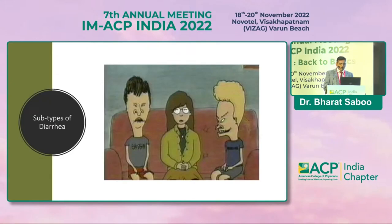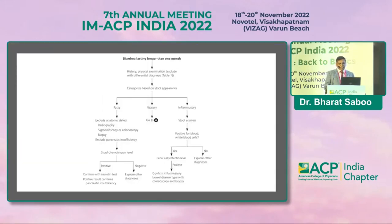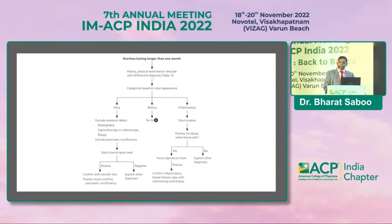There are three major types of diarrhea: fatty, watery, and inflammatory. We begin with history taking and categorize based on stool appearance. For fatty diarrhea, we exclude anatomic defects using radiography, sigmoidoscopy, and colonoscopy, and exclude pancreatic insufficiency with stool chymotrypsin level. If positive, we confirm with the secretin test. For inflammatory diarrhea, stool analysis positive for blood or white cells is followed by fecal calprotectin; if positive, inflammatory bowel disease is confirmed.